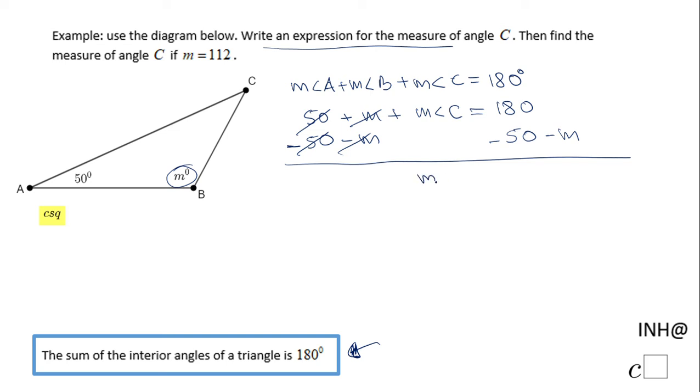And then we have the measure of angle C equals 180 minus 50, which is 130, so 130 minus M. This is an expression that allows us to find the measure of angle C for any value of M.